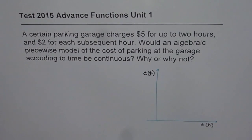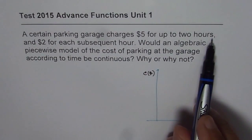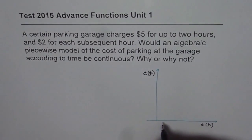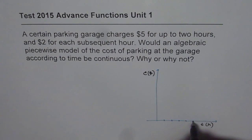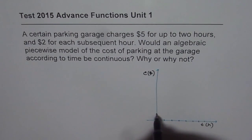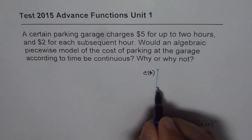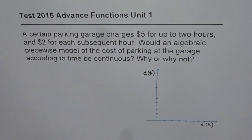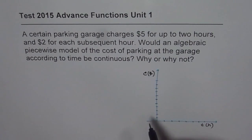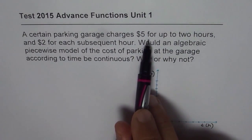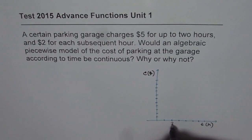It is given that up to 2 hours, $5 is the rate. So let's mark the units: the horizontal axis goes up to about 10 hours, and the vertical axis shows dollar values. This point at t = 2 hours represents $5.